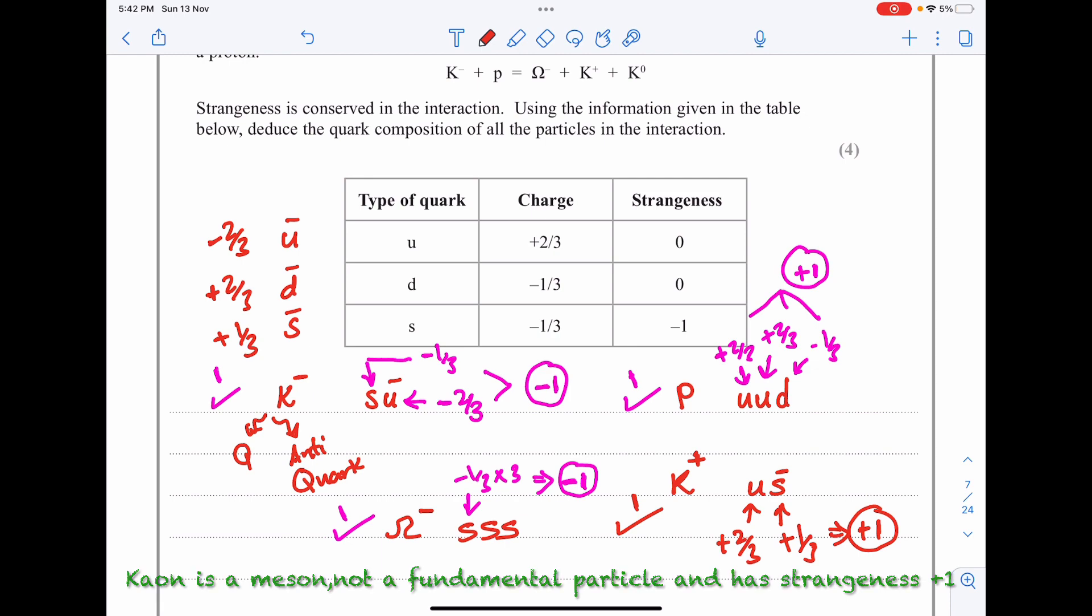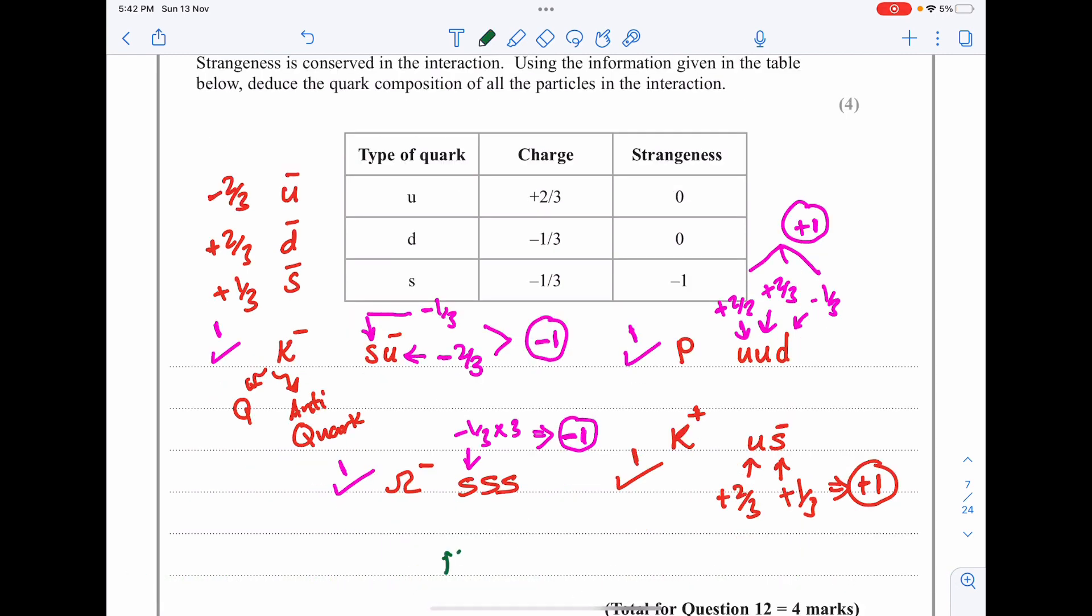K⁰ is neutral. The kaon consists of quark and anti-quark, not a fundamental particle. A good one is going to be down which is -1/3 and anti-strange which is +1/3. So they cancel out and the sum of these is going to be zero. I got one mark for the K⁰ which is neutral.